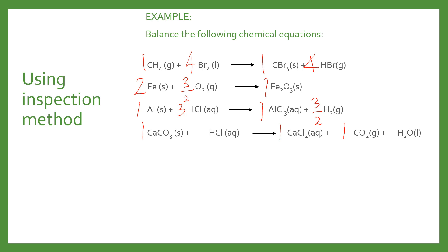Then we balance hydrogen and chlorine. On the product side, we have two hydrogen and two chlorine, but on the reactant side we only have one and one. So we put two in front of HCl to balance both hydrogen and chlorine.